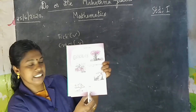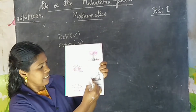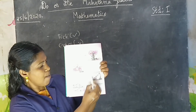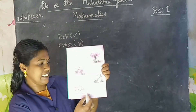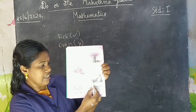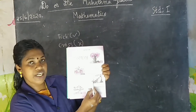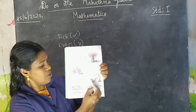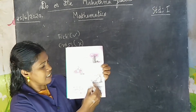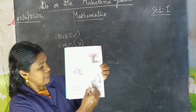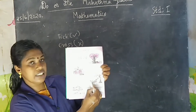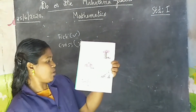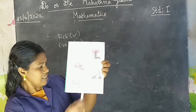Take the child at the bottom of the stairs. Here, the boy is at the bottom. Therefore, tick the boy at the bottom of the stairs.